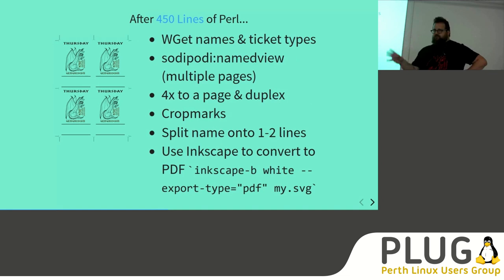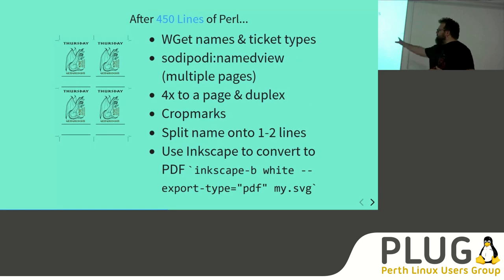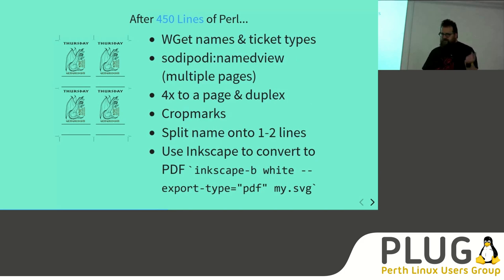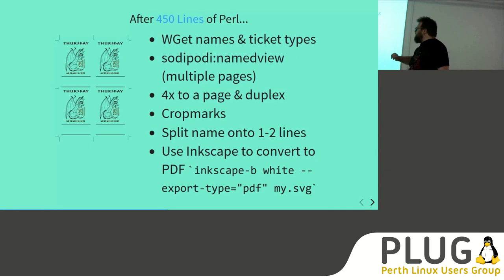Basically it just breaks down the viewport — it says this part of the viewport is this page, that part is that page. The underlying SVG is still just one big graphic, but it allows you to divide it up into pages. This script also handles forward-and-back duplex and reverses the order so that when you flip it over and print the other side, you get the same person's name on the front and back of the badge. It has logic to split the name into one or two lines, and finally tells Inkscape to convert the SVG back to a PDF for printing.